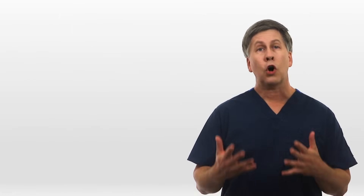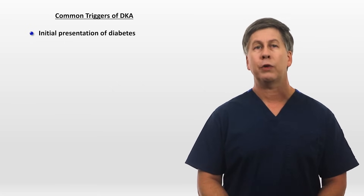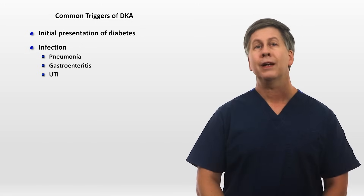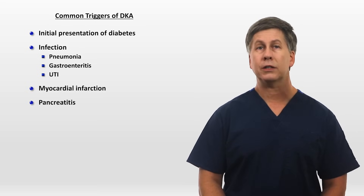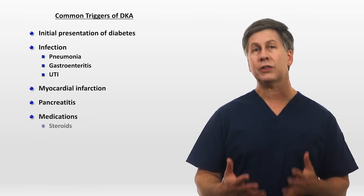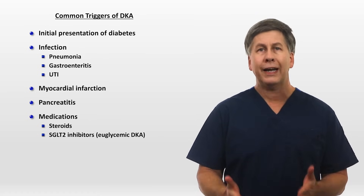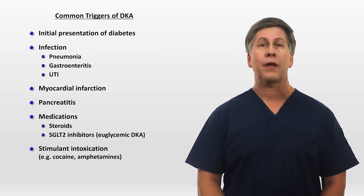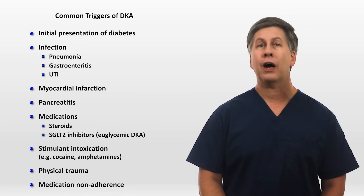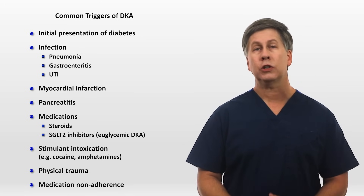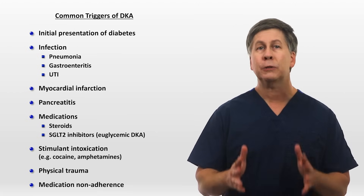What are the common triggers of DKA? It can be the initial presentation of type 1 diabetes or even type 2 diabetes in rare cases; infections — most often pneumonia, gastroenteritis, or urinary tract infection; myocardial infarction; pancreatitis; medications — most notably steroids, but as mentioned, SGLT2 inhibitors are associated with euglycemic DKA. There are other medication triggers as well, intoxication with either cocaine or amphetamines, physical trauma including burns, and medication non-adherence, which should be considered a diagnosis of exclusion — meaning you should only attribute the DKA to that if every other potential cause has been definitively ruled out.